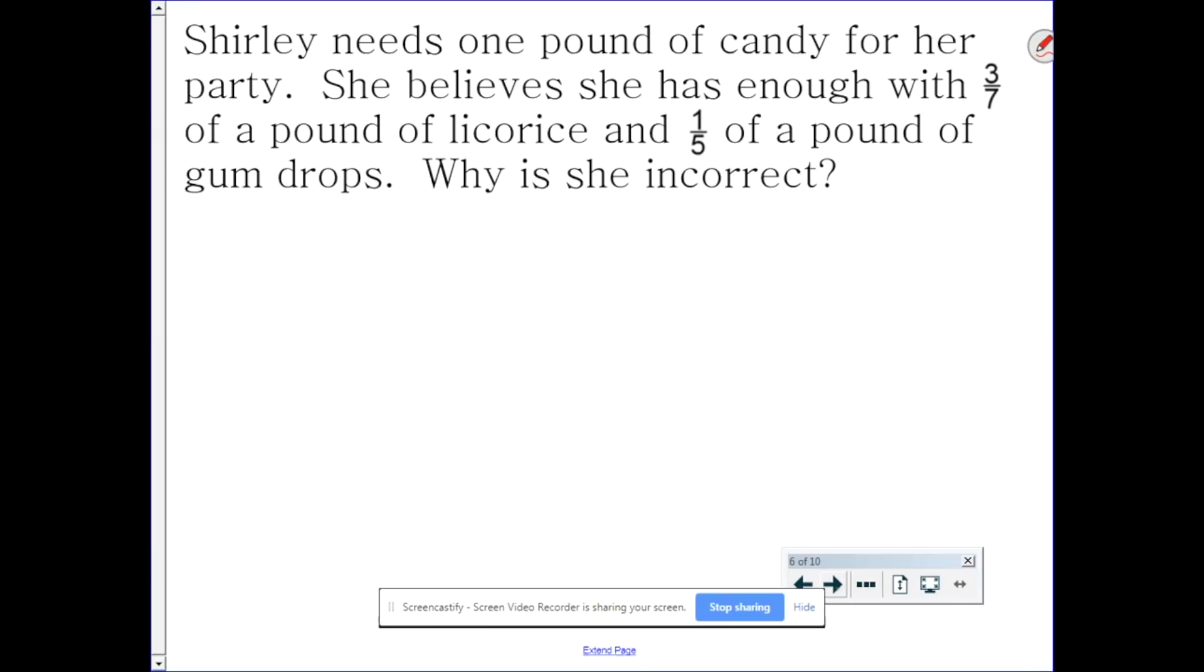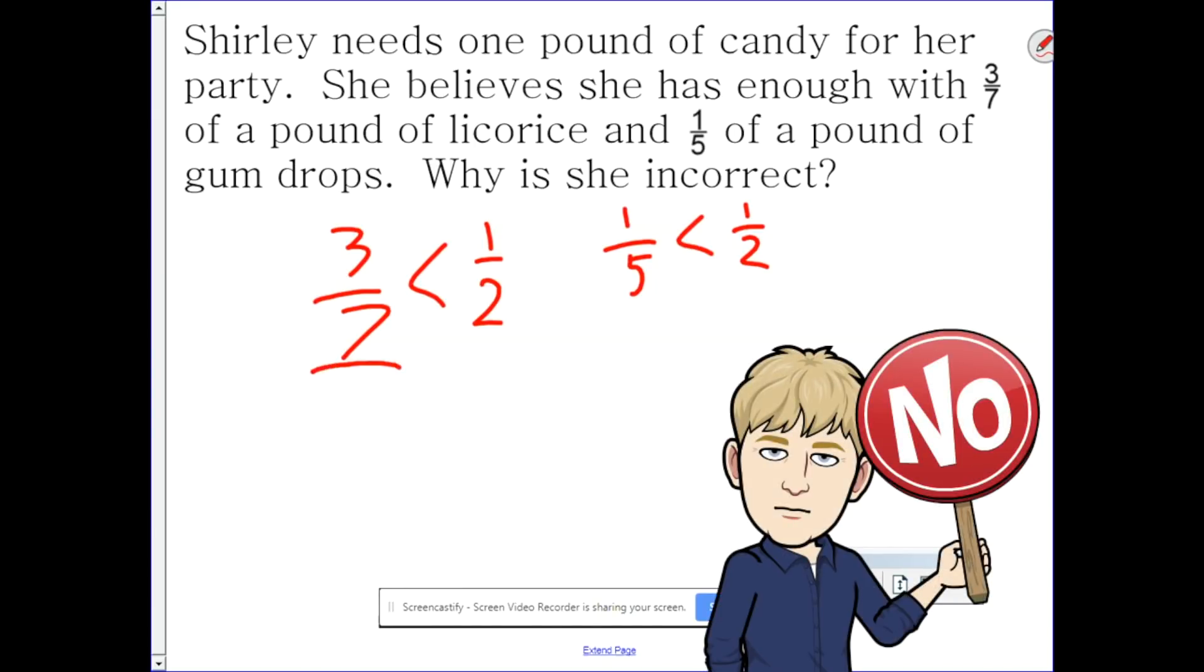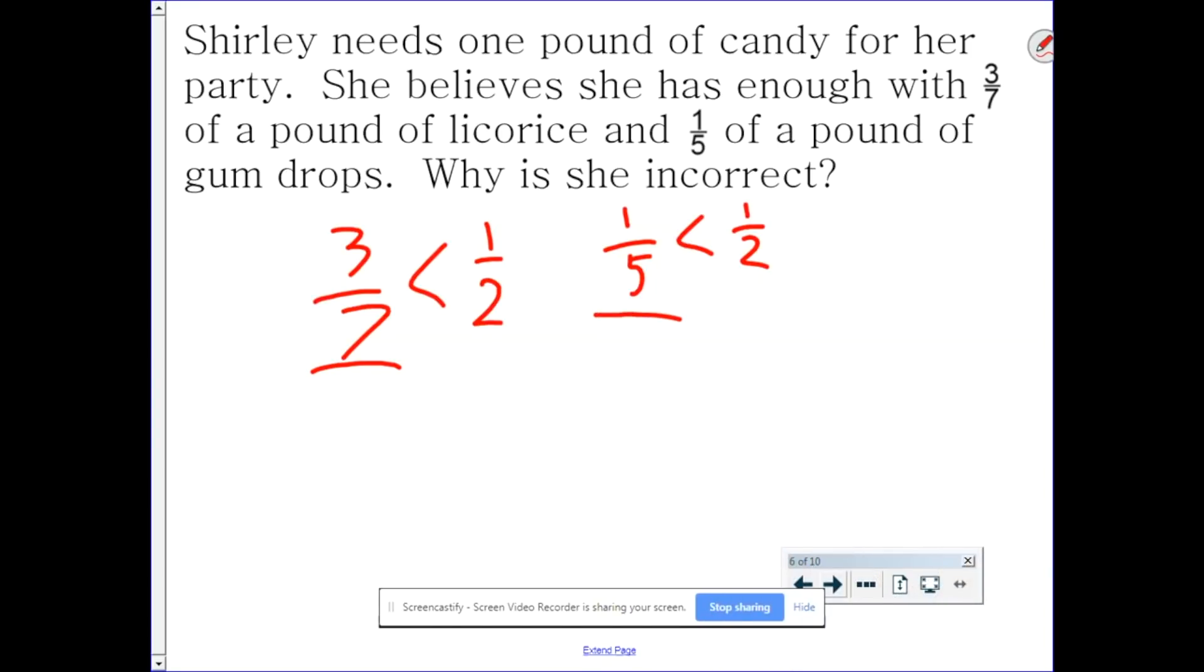Well, from the previous page, we saw that three-sevenths was less than half, and one-fifth is less than half. So when we add them together, it's going to be less than one whole pound. So she is incorrect because these two fractions are less than half. Therefore, she can't possibly have enough for her party.